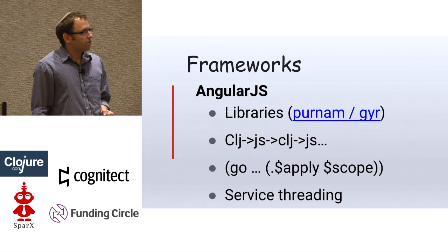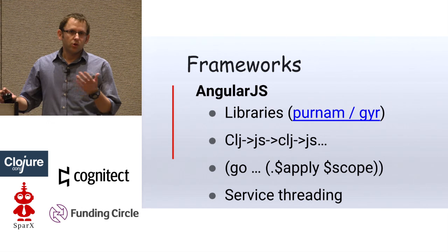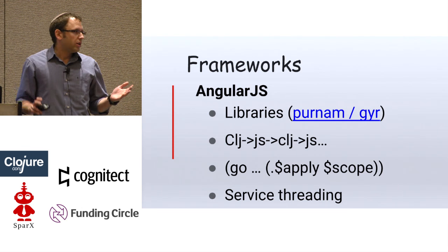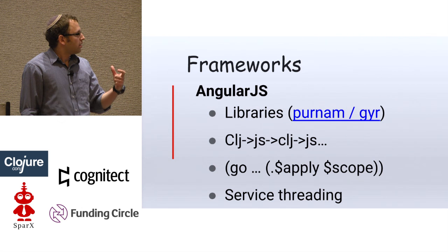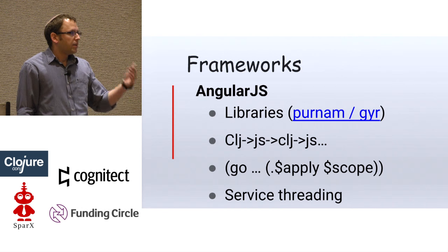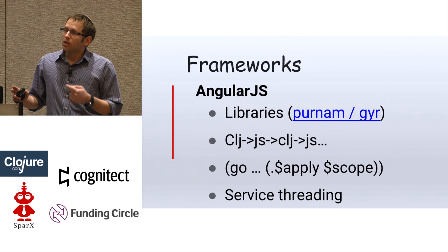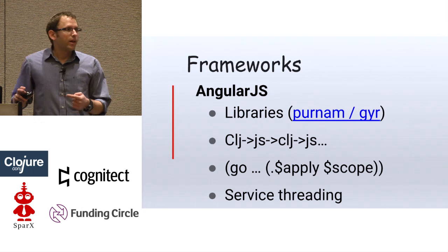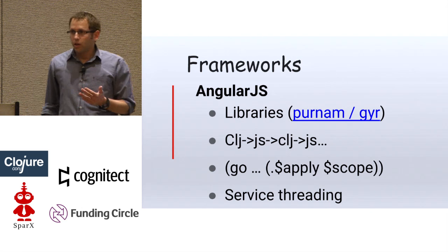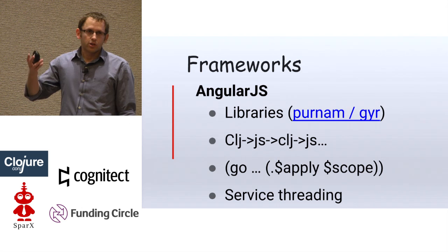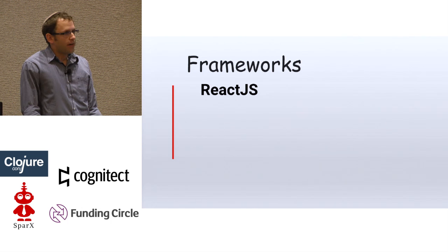Another issue is what I call service threading. Angular is a very rich library — it has almost everything from HTTP to translations. But you have to inject these services at the beginning of your controller. If you have a function 15 levels deep, you have to thread this service all the way through, which is not really the Clojure way where you just call a namespace function whenever you want. So we gave up Angular and moved to React.